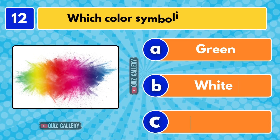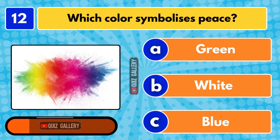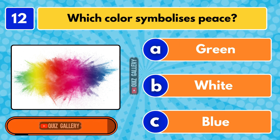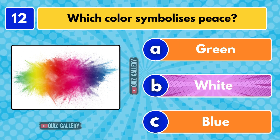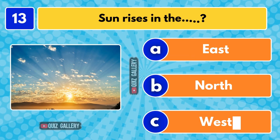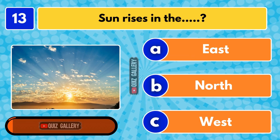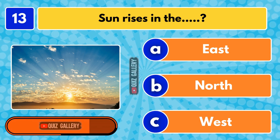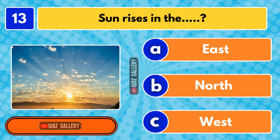What color symbolizes peace? White color. Sun rises in the... East.